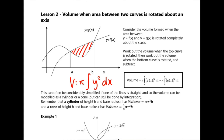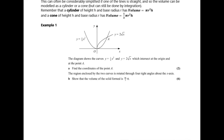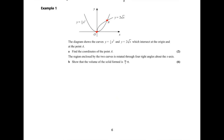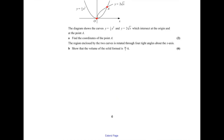Let's have a look at example one. We've got two graphs: y equals 2√x and y equals ¼x². They intersect at the origin and at point A. First, find the coordinates of point A. We set them equal to each other: ¼x² equals 2√x, which I'll write as 2x to the half.